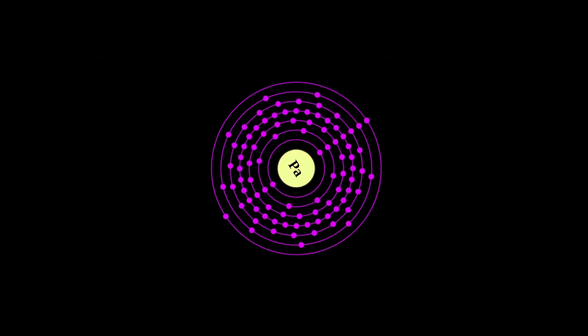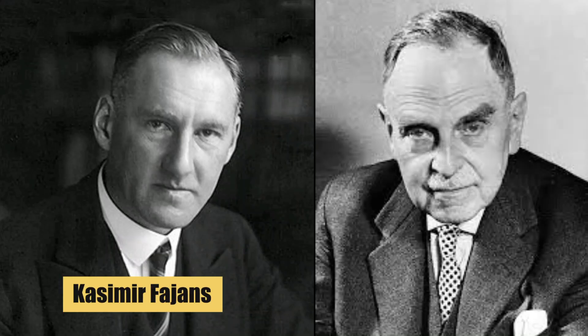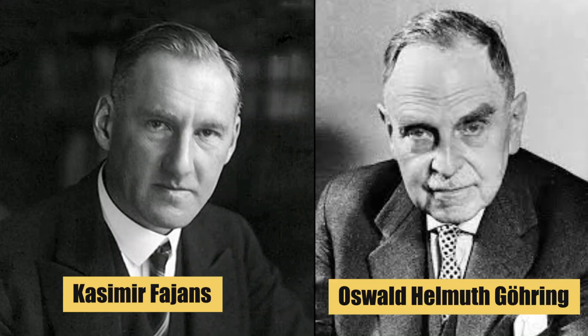Protactinium was first discovered in 1913 by Cassimer Fajans and Oswald Helmuth-Goring, who isolated it from uranium ore.